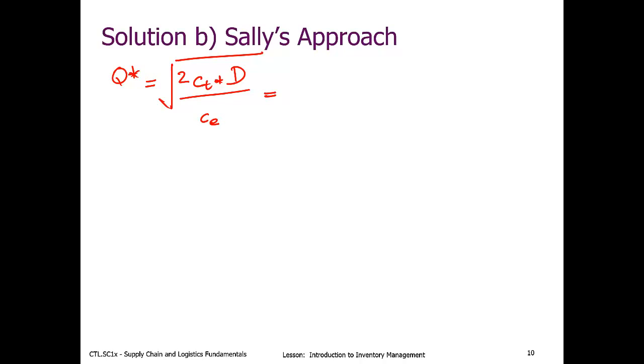Yes, we do. And how do we move? Two times CT is 100. Our annual demand is 5,000 divided by CE, which we can calculate from C times H, which was $2 per unit times H was given to us as 0.28. So this gives us a value of 1,000,000 divided by 0.56.